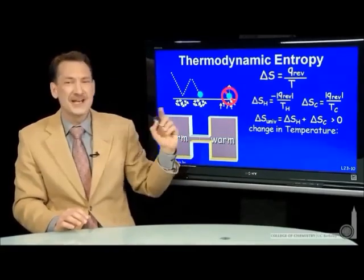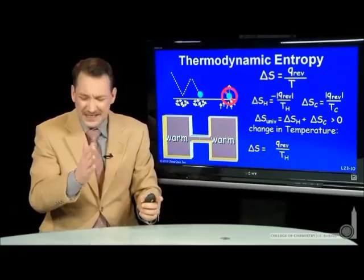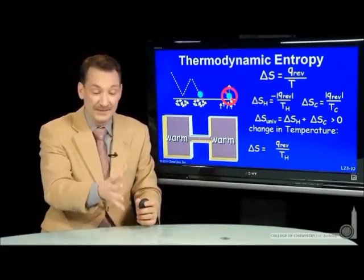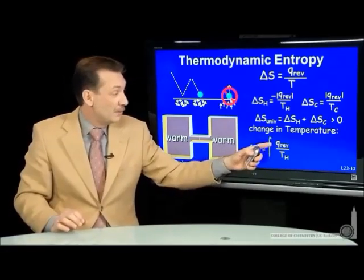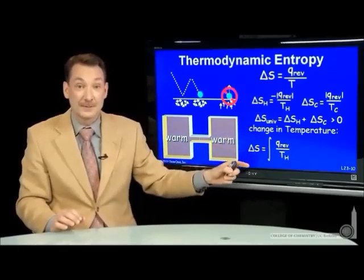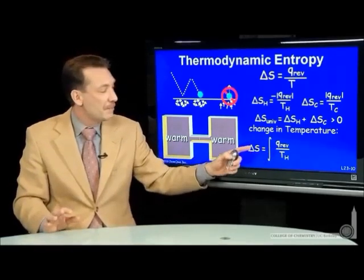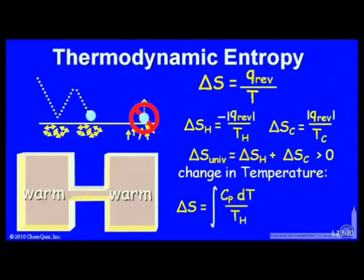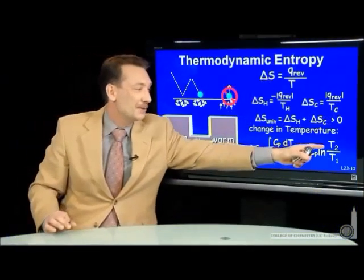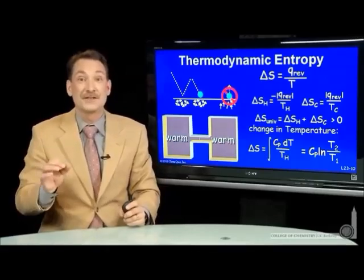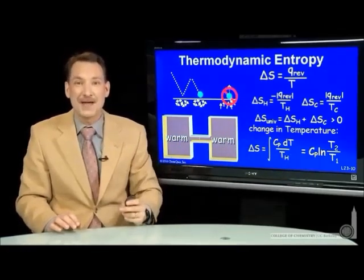What if the temperature changes? We can simply divide into tiny steps and add up individual entropy contributions at constant temperatures — transfer a little heat at one temperature, then a little more at a higher temperature. The sum of all those becomes an integral. If I take the heat represented as the heat capacity times the change in temperature, adding all those individual C_p ΔT terms, the entropy change for a temperature change is the heat capacity times the natural log of T₁ over T₂. So temperature change and heat capacity determine the entropy change, strongly related to the heat capacity of the system.